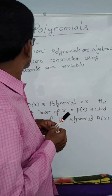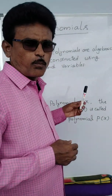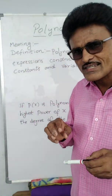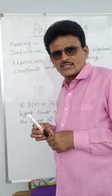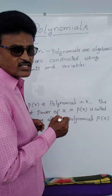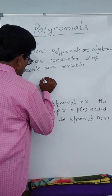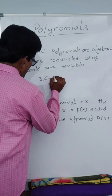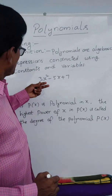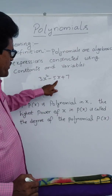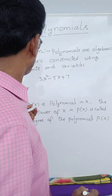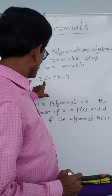Polynomials are algebraic expressions that are constructed using constants and variables. See this — algebraic expressions constructed using constants and variables. What are these constants and variables? See one example: 3x squared minus 5x plus 7. Here 3, 5, 7 are constants and x is the variable.